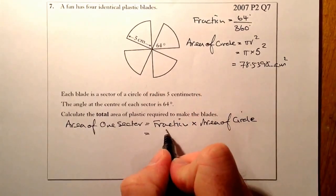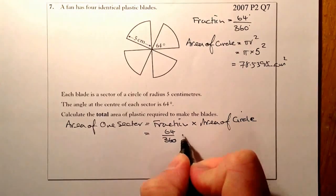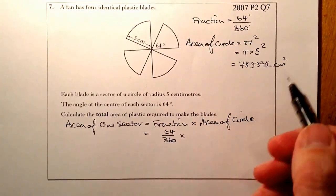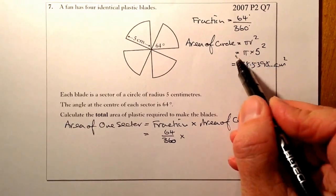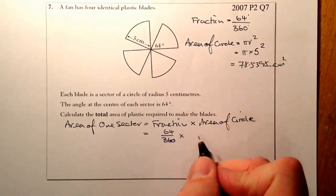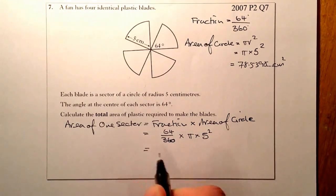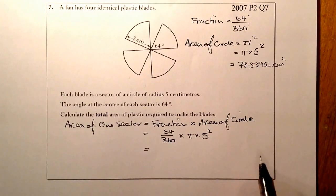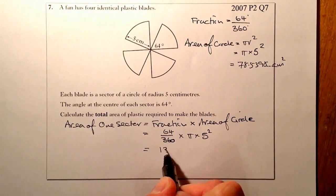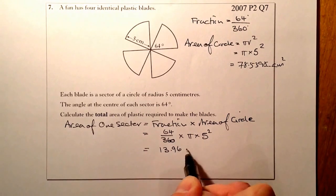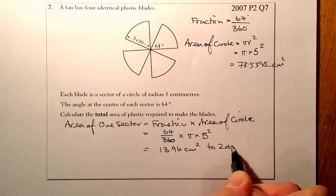So the fraction there was 64 over 360. I'm going to multiply that by the area of the circle. I could use the number I've worked out for the area, or to get a more accurate figure, use pi times 5 squared. From there, I should get the area of one sector. If I fire that into the calculator, I should get 13.96 cm squared to two decimal places.